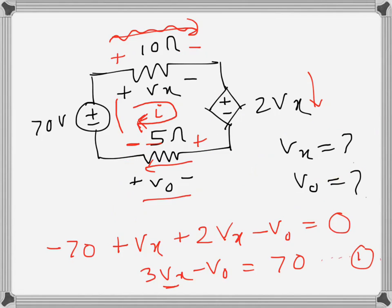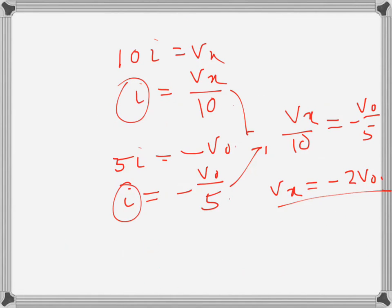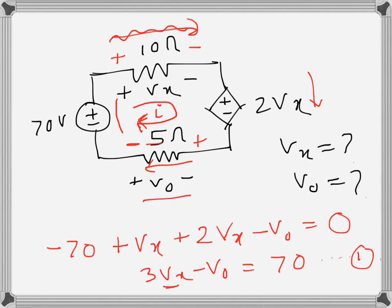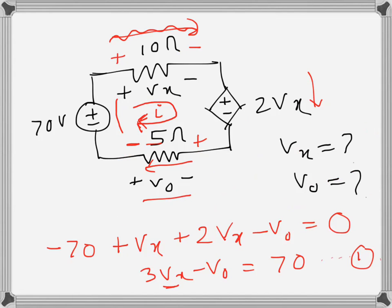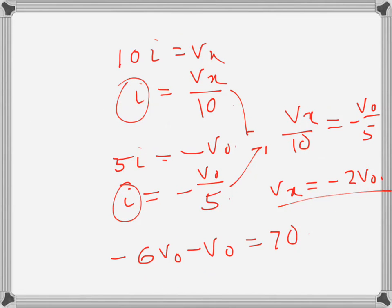So vx becomes—now 3vx—so that will be minus 6v naught, and then minus v naught is equal to 70. So basically, instead of vx, I have written minus 2v naught, so minus 2 times 3 is minus 6. So that is why I have 6v naught here. So it is negative 7v naught is equal to 70.